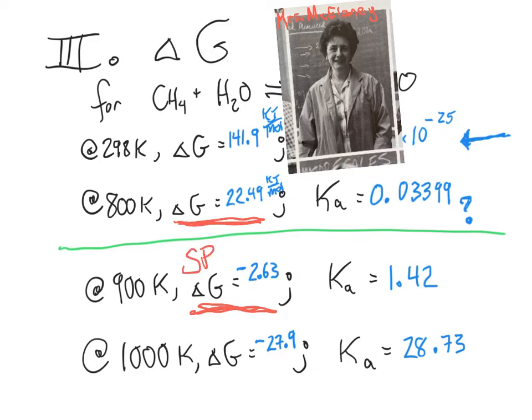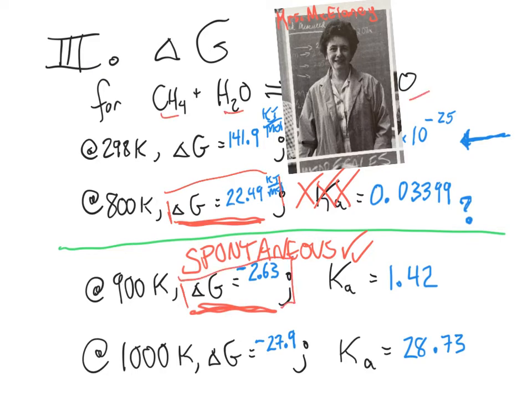And this one is exergonic, being a negative number. And so what we expect here is that this reaction will proceed spontaneously in the direction written, that is, towards hydrogen and carbon monoxide, whereas this one up here, 800, we don't expect to proceed at all. And Mrs. McElaney was awesome, and I honor her memory. But she was teaching a simplification, and it's a fair simplification because it neglects the impact of how we have set up our reactor, how we have constructed the contents of our reactor.